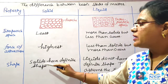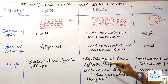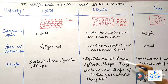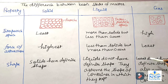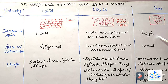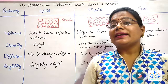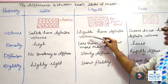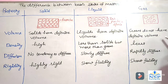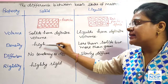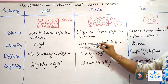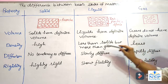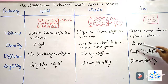Shape: solids have definite shape. Liquids do not have definite shape — they assume the shape of the container in which they are kept. Gases also do not have definite shape; they assume the shape of the container because of the kinetic energy of the particles. Volume: solids have definite volume, liquids also have definite volume, but gases do not have definite volume.